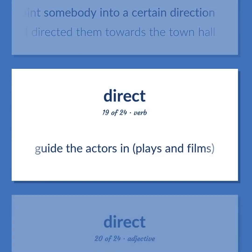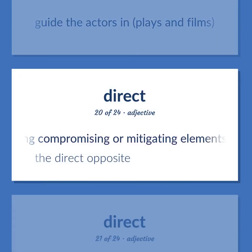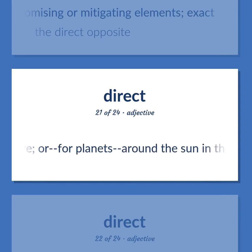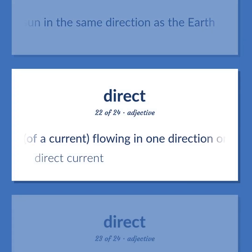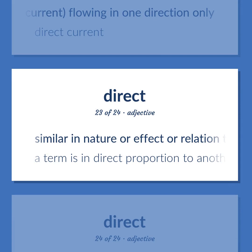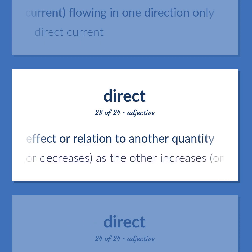Direct: Guide the actors in plays and films. Lacking compromising or mitigating elements; exact — the direct opposite. Moving from west to east on the celestial sphere, or for planets, around the sun in the same direction as the earth. Of a current, flowing in one direction only — direct current. Similar in nature or effect or relation to another quantity — a term is in direct proportion to another term if it increases or decreases as the other increases or decreases.